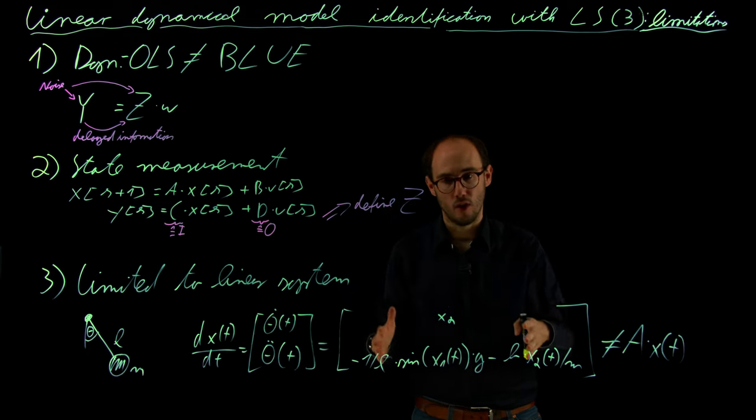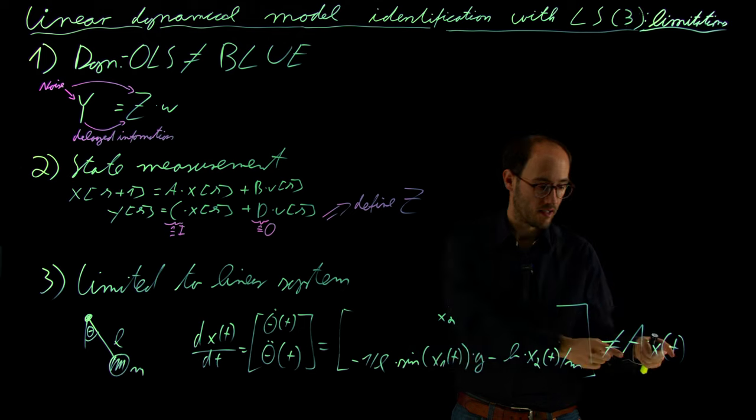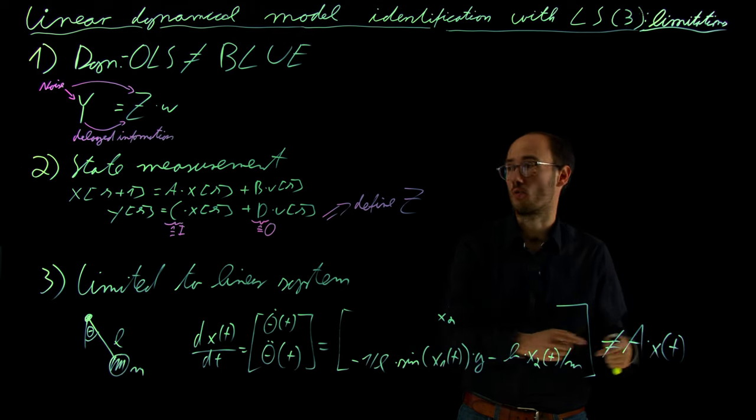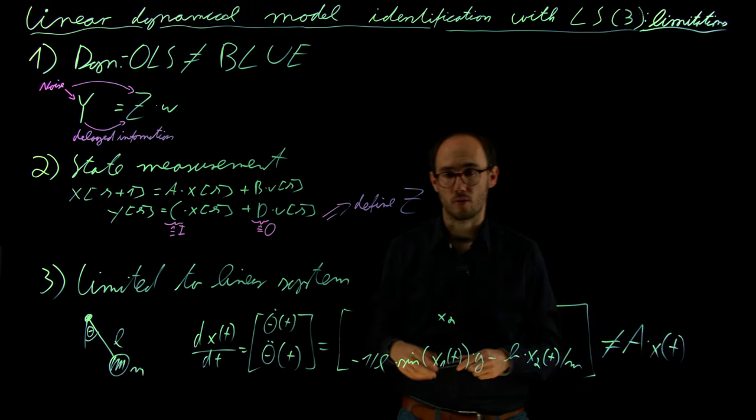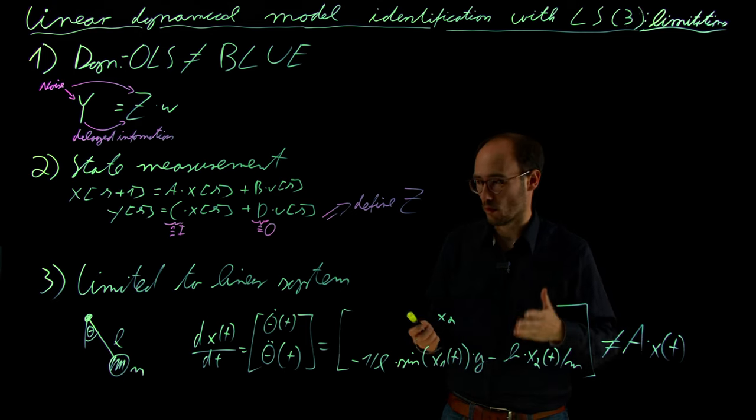So if we have any kind of nonlinearity, we are not able to represent it in such a way, and therefore we are not able to build up our ordinary least squares problem.